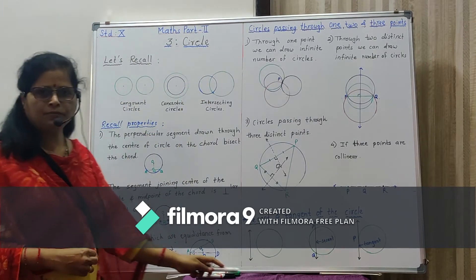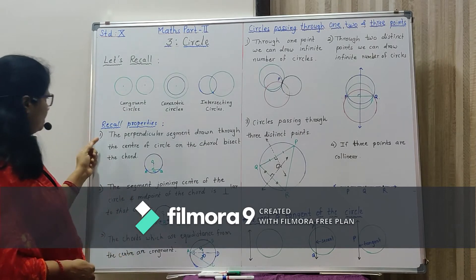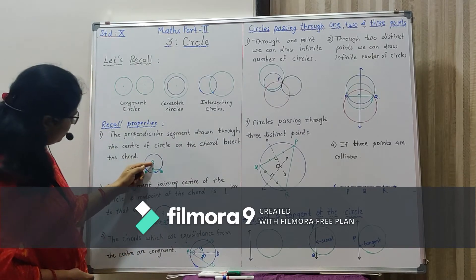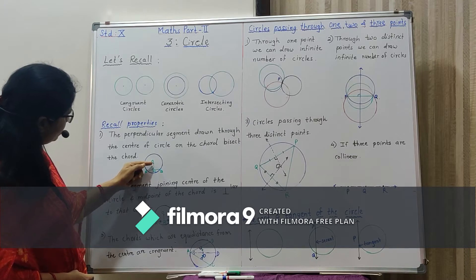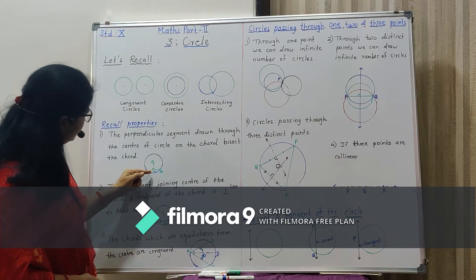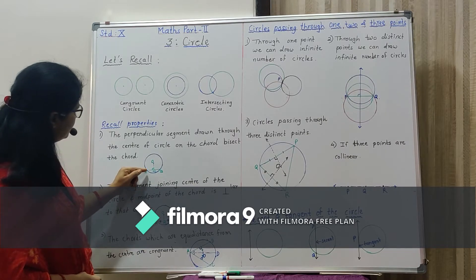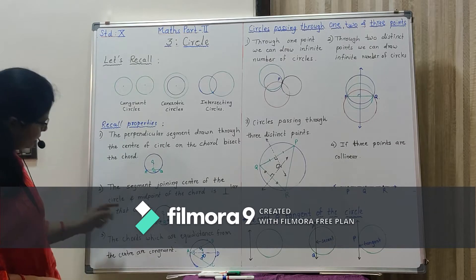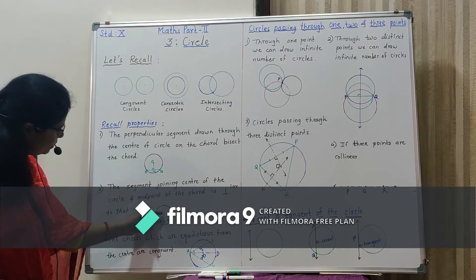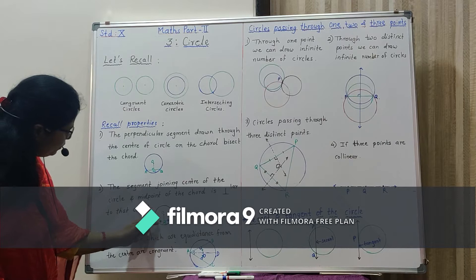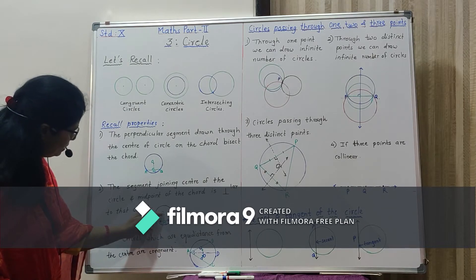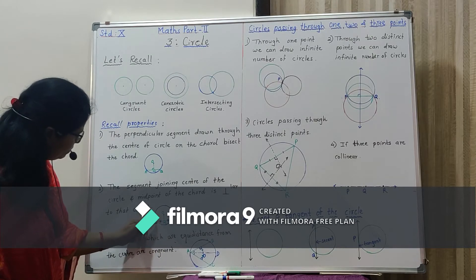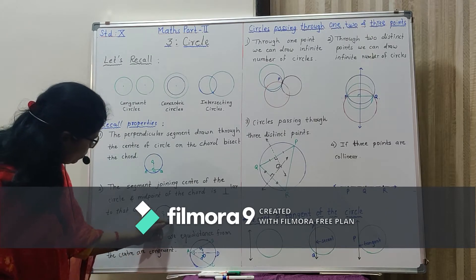Now let us review some properties. Property number 1: If a perpendicular segment is drawn through the center of the circle on chord AB, then this segment bisects the chord AB. That is, AM is equal to BM. Property number 2: If N is the midpoint of segment AB and O is the center, then the segment joining the center and the midpoint of the chord is perpendicular to chord AB.